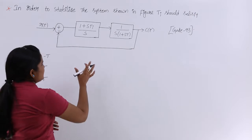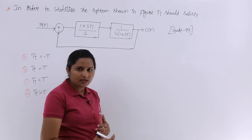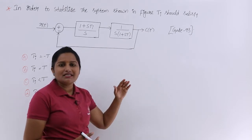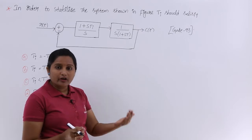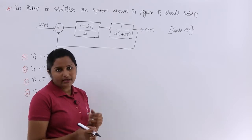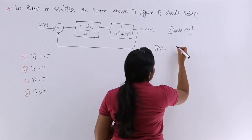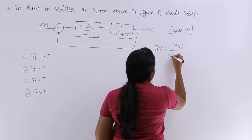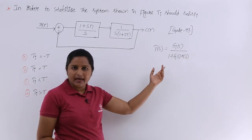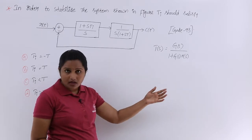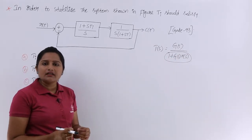The characteristic equation is nothing but the denominator of our transfer function — that point is very important and will give you solutions in many Gate problems. The transfer function T(S) = G(S) / (1 + G(S)·H(S)) for negative feedback, or 1 minus in case of positive feedback. Whatever the denominator of this transfer function is, that is what we use to write the Routh array.